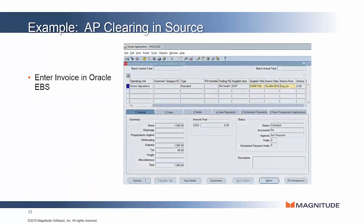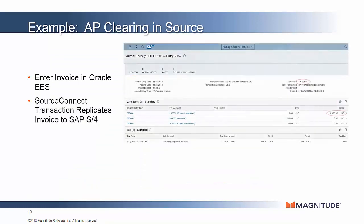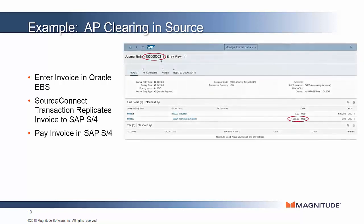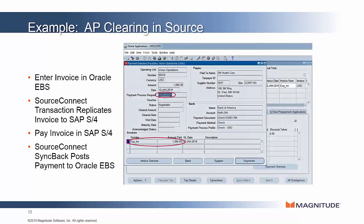Here we have an example of a vendor invoice in Oracle eBusinessSuite. SourceConnect Transaction will replicate this unpaid invoice into Central Finance. Then in a shared service mode, the vendor invoice payment is applied within Central Finance itself. At this point, SourceConnect Syncback will detect that payment and write it back to the source system — in this case Oracle eBusinessSuite — and apply that payment to that vendor invoice, essentially closing that invoice in the source and keeping the vendor balance in sync.